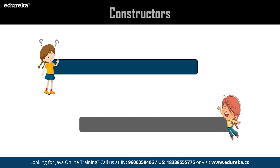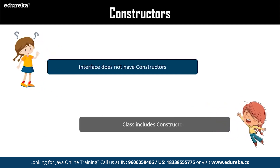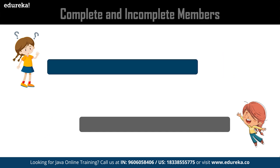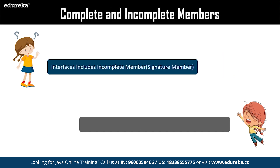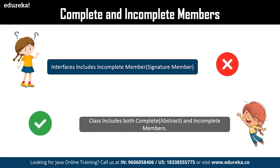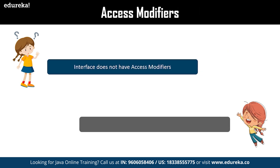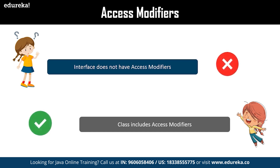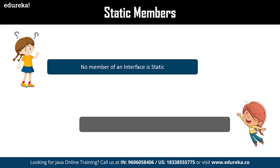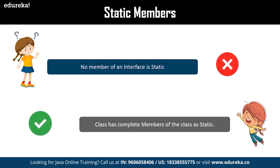The next difference is constructors — interface does not have constructors, while classes include them to help set values to members of an object. Regarding complete and incomplete members, interfaces comprise only methods (signature members), while classes include both data members (abstract members) and methods (signature members). For access modifiers, interfaces default to public, whereas classes provide private access modifiers. Finally, interface cannot have any static members, whereas a class has all its members as static.